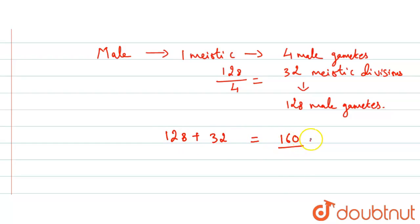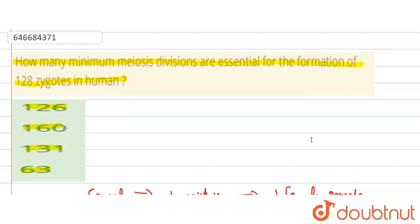160 zygotes in human. So the answer is 160.